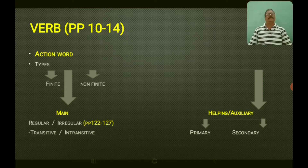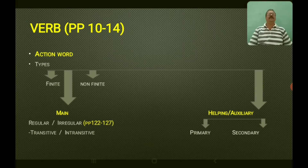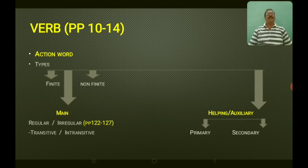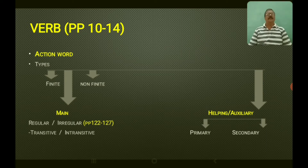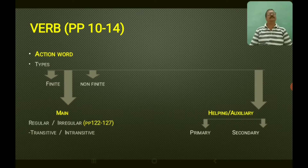The first types are finite and non-finite, and you have main verb and helping verb or auxiliary verbs. Again you have regular and irregular verbs — you can find them in page number 122 to 127 of your workbook. And once again you have transitive and intransitive verbs. Remember all these terms: finite, non-finite, main verb, helping verb or auxiliary verbs, regular, irregular verbs, transitive and intransitive verbs. In the helping or auxiliary verbs, you have primary auxiliaries and secondary auxiliaries.